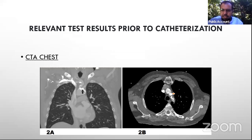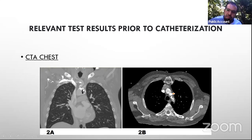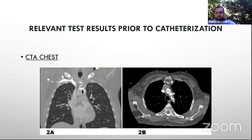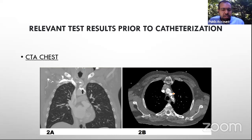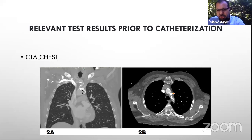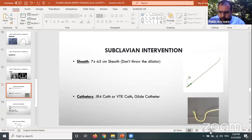The CT scan showed severe arch calcification — a large chunk of calcium at the ostium of the left subclavian artery representing approximately 90%+ stenosis, nearly occlusive. This was a heavily calcified lesion at the ostium. The CT angio also demonstrated unusual great vessel anatomy: the exact origins of the brachiocephalic, left carotid, and left subclavian arteries from the arch were difficult to delineate precisely, prompting further anatomic characterization before intervention the next day.